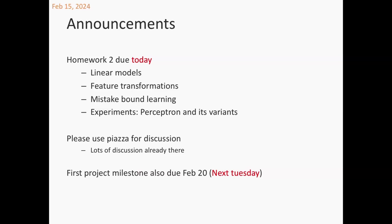This homework is talking about linear models, feature transformations, and mistake bounds, and you're implementing perceptron. I noticed there was a lot of discussion on Piazza about the feature transformation. There's actually a very relevant suggestion that almost gives you the answer. I encourage you to take a look at that discussion and try to read between the lines.